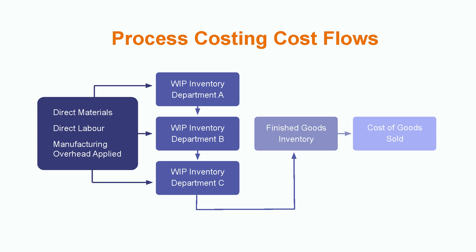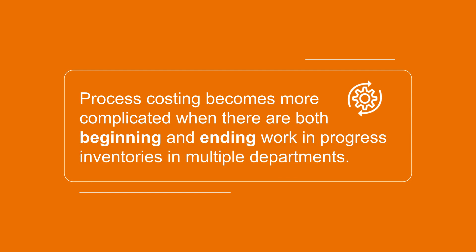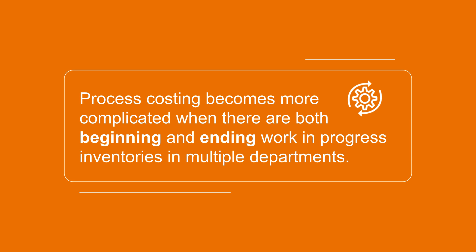Work-in-progress or process inventory refers to partially finished goods that come in between raw materials and final products in the production process. The impact of work-in-progress in a process costing system is that we have to track all the costs involved in different departments so that we can allocate the costs appropriately to the products. Process costing becomes more complicated when there are both beginning and ending work-in-progress inventories in multiple departments, because the costs stored in the beginning work-in-progress were incurred during the prior period. A decision must be made about how to handle those costs.